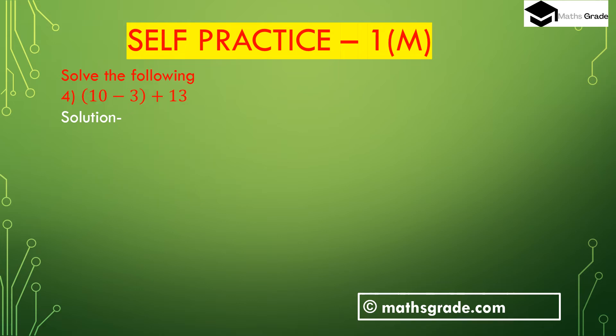Now question number 4: (10 minus 3) is inside the bracket, plus 13. First we have to calculate the subtraction inside the bracket: 10 minus 3 is 7. Then 7 plus 13 is 20. So 20 is the answer. So (10 minus 3) plus 13 is 20.